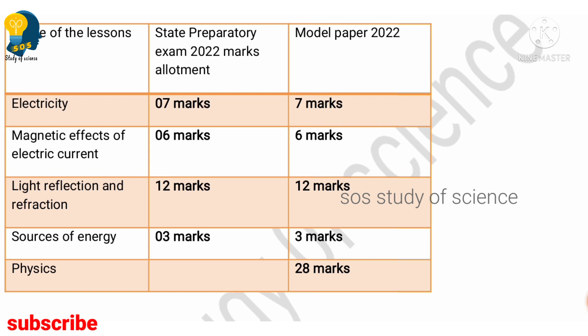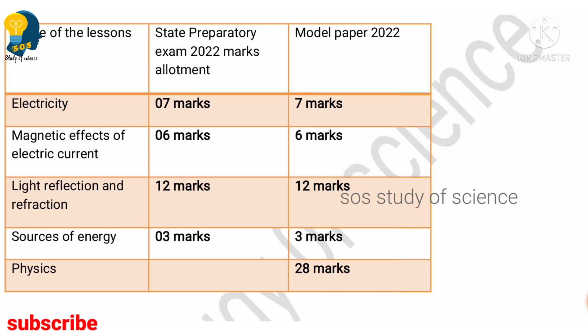By reading physics totally, you will get 28 marks. So this is all about the marks allotment for biology, chemistry, and physics. Those who have not yet started reading science, or those who are finding it difficult, focus on particular lessons and read them properly to get the maximum number of marks. For example, if you have already studied Light Reflection and Refraction, you know you will get 12 marks — now check which lesson is still pending and focus more on that. By knowing the marks allotment, you can study even better.